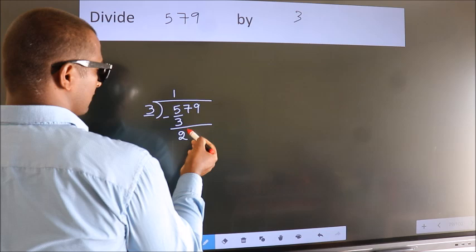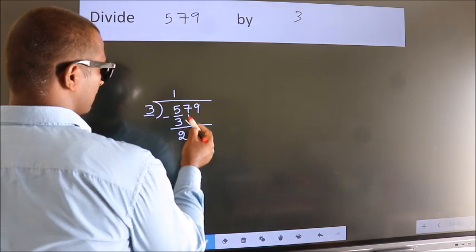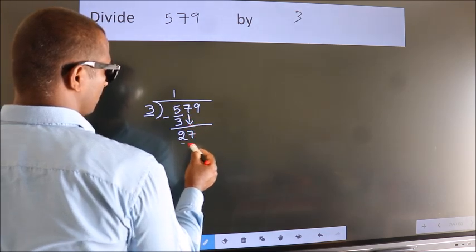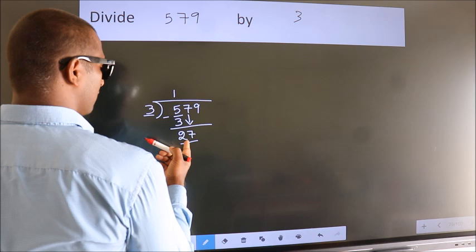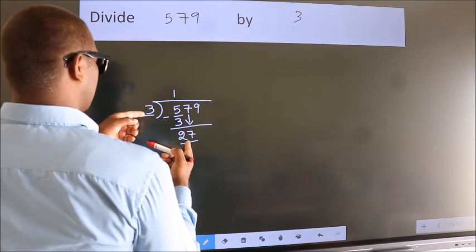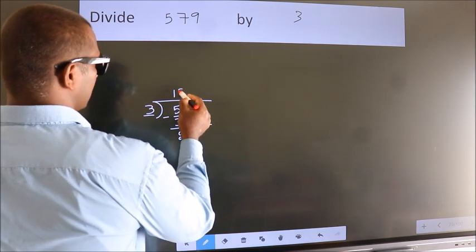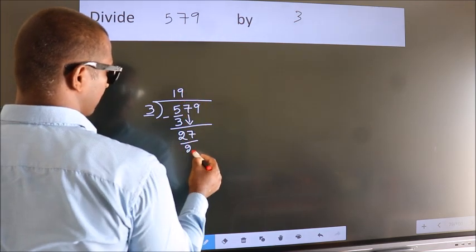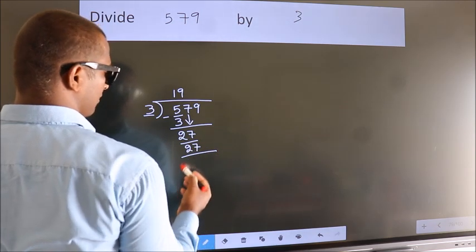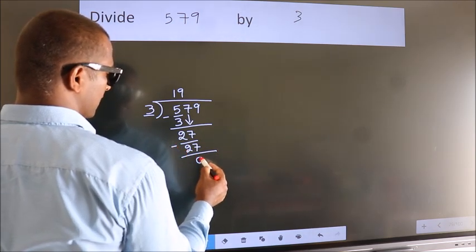After this, bring down the beside number. So, 7 down. So, 27. When do we get 27? In 3 table, 3 nines, 27. Now, we subtract. We get 0.